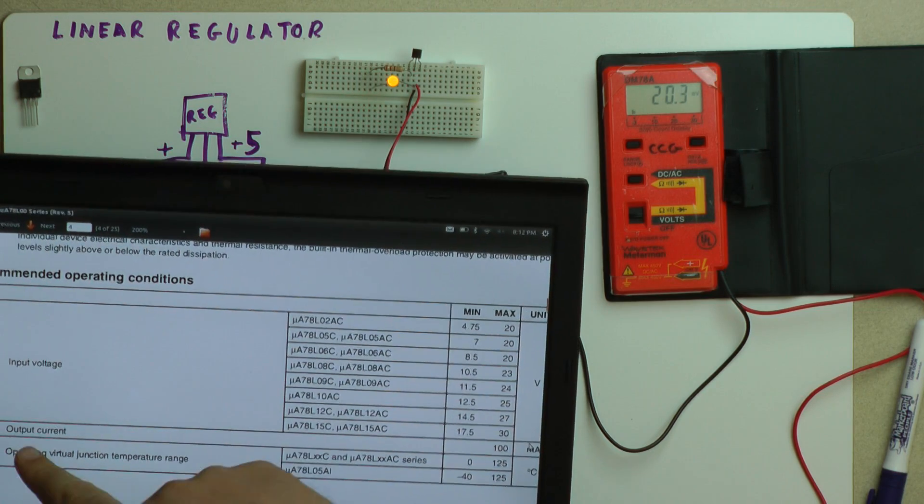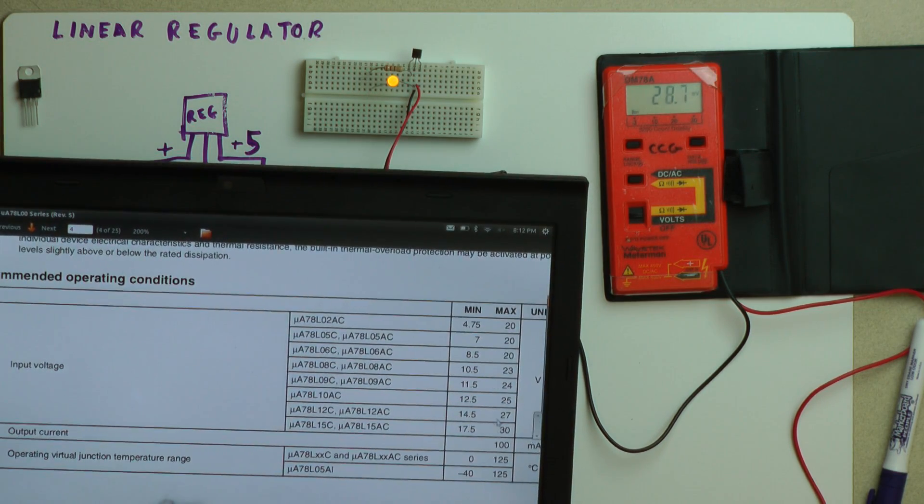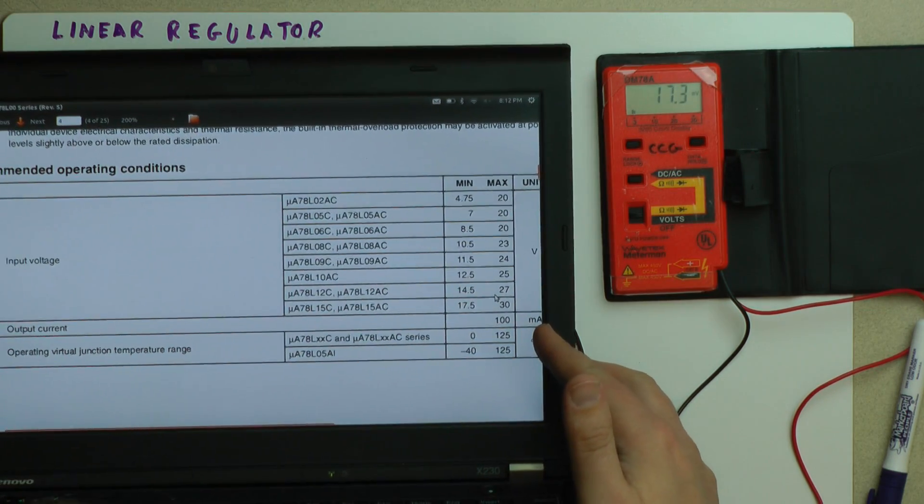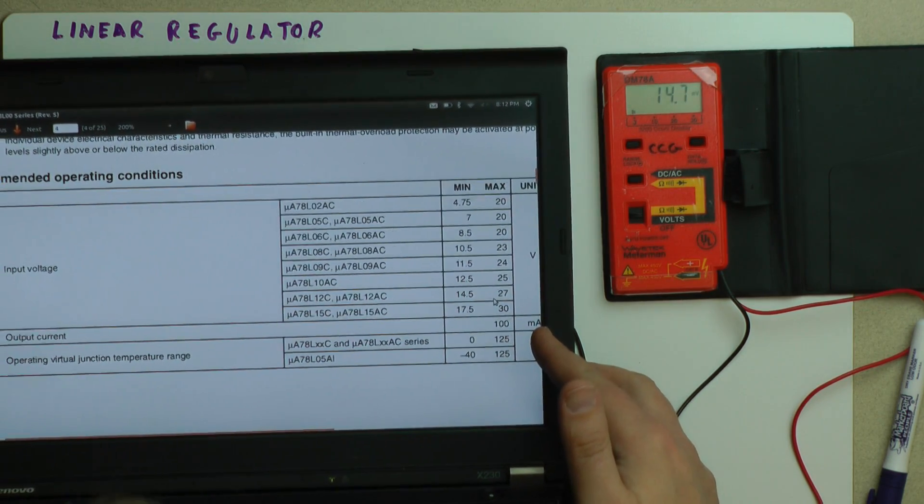Also, it shows that my maximum output current is 100 milliamps. I've got to be careful about that, because if I exceed that, the linear regulator will not provide the proper voltage. So you've got to be careful not to exceed that.